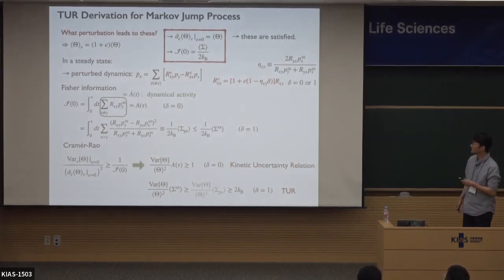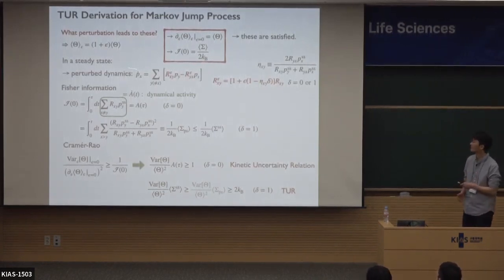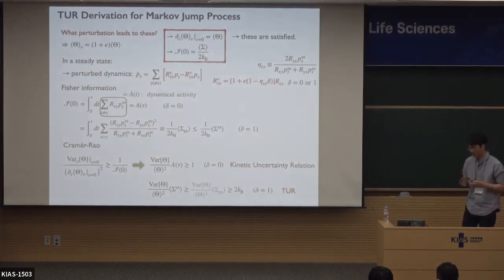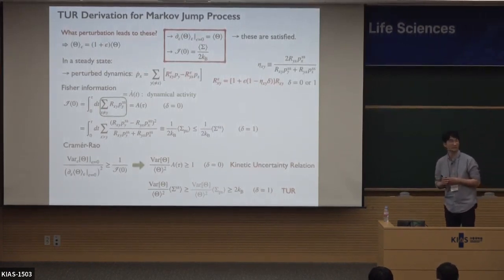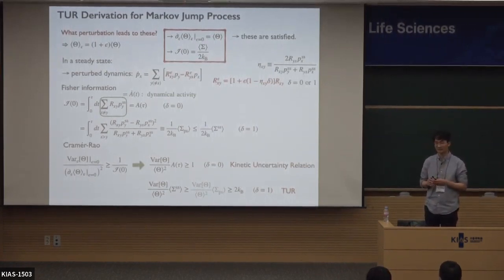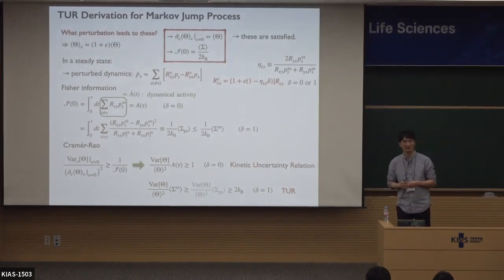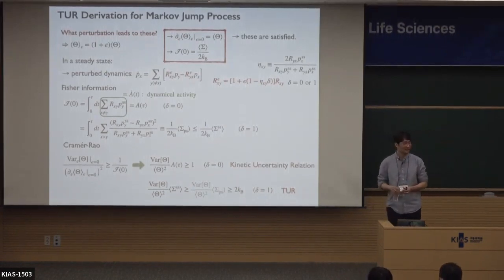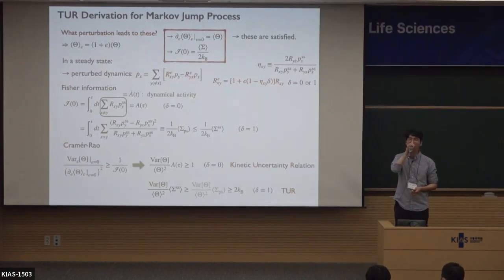So in this way we can prove the TUR using the Cramér-Rao inequality, starting from the time-scaling perturbation. That's the right time to stop — this concludes my third lecture. Any questions?